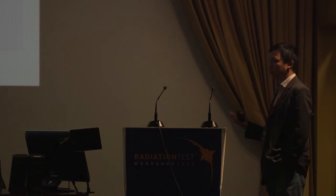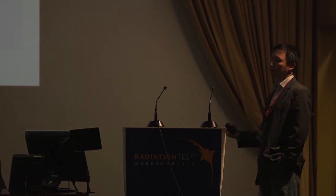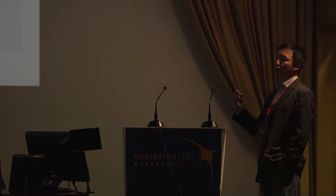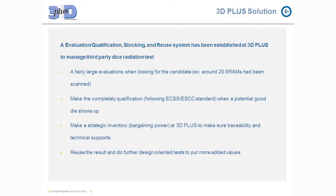Secondly, we observe big variations — from process to process, manufacturer to manufacturer, design to design, revision to revision — those are the traditional ones. Now the new ones are part number to part number, lot to lot, and even piece to piece. For example, with new NAND flash at below 30 nanometers, we see big variation from piece to piece in TID testing.